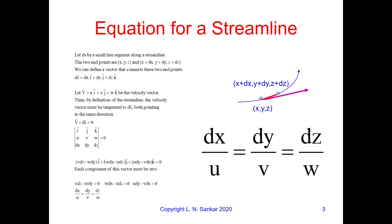So how can we mathematically define it? You take two points on a streamline. One point is called x, y, z, and the neighboring point is slightly away at x plus delta x, y plus delta y, z plus delta z. You connect the two points with a small line vector ds, given by dx·i + dy·j + dz·k. The velocity vector is defined by its three Cartesian components u, v, w as u·i + v·j + w·k. If ds vector is pointing in the same direction as the velocity vector V, then the cross product should be 0, because the included angle is 0.